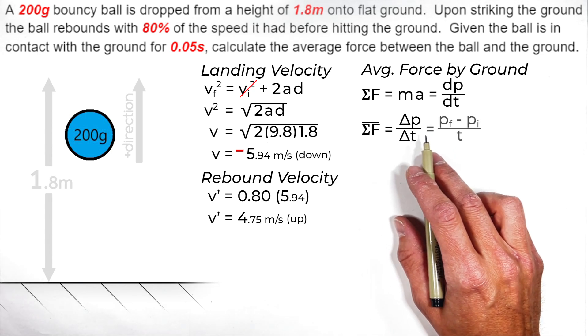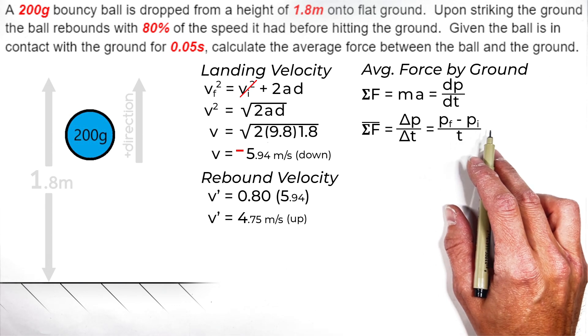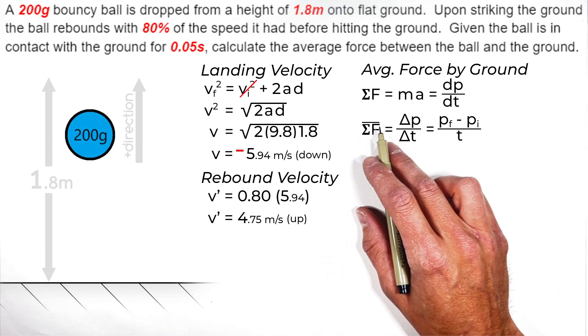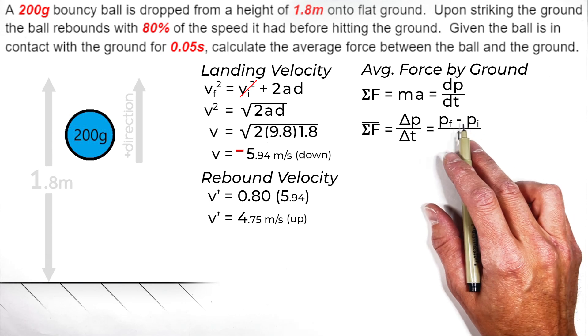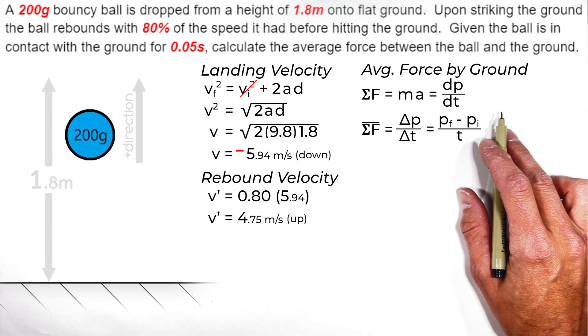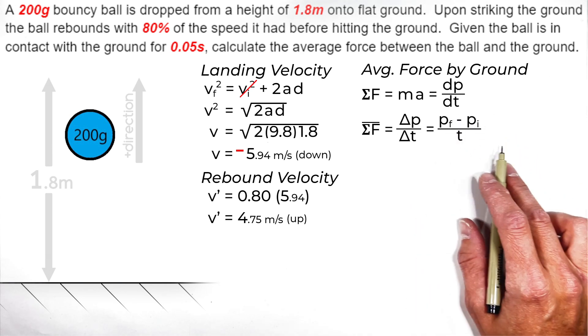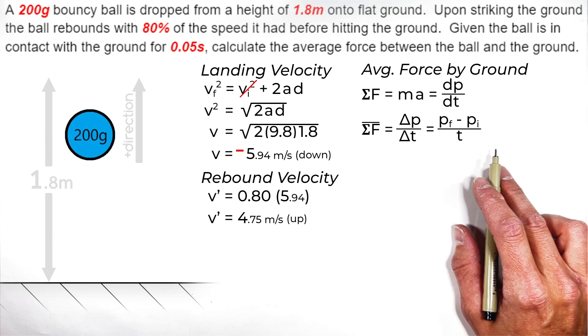Now remember, a change can be shown as a final minus an initial value. So what we're looking at is our average net force is equal to our final momentum minus our initial, that's our change in momentum, divided by the time that this collision takes.